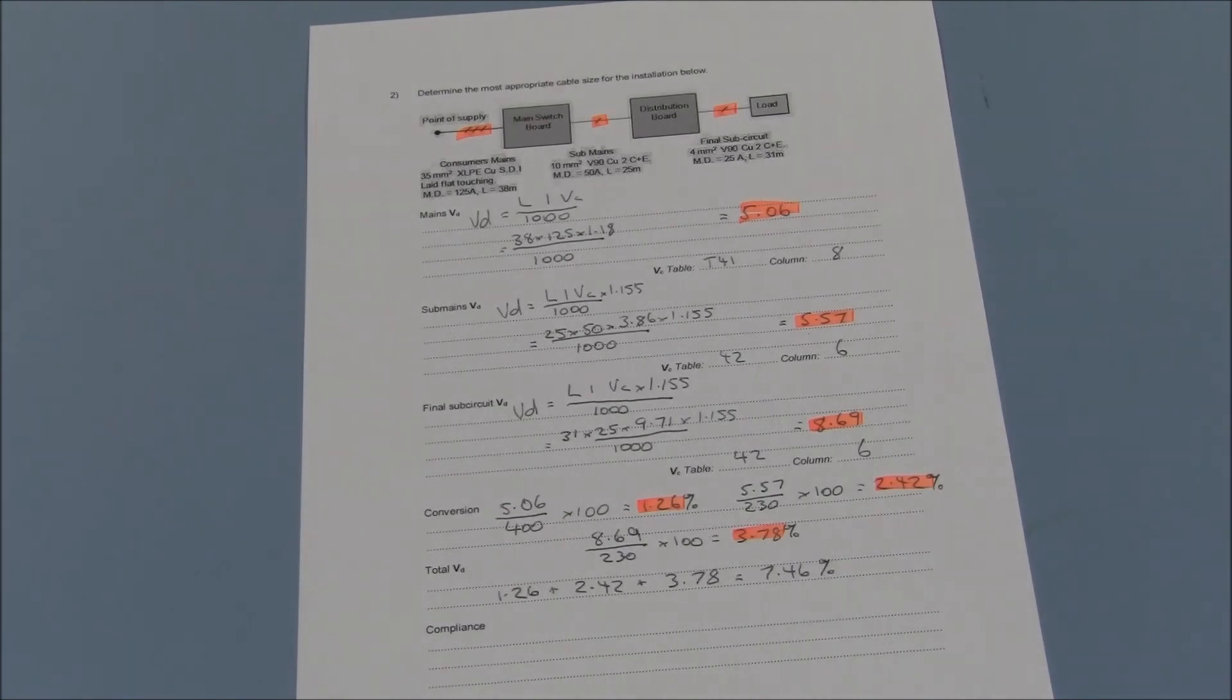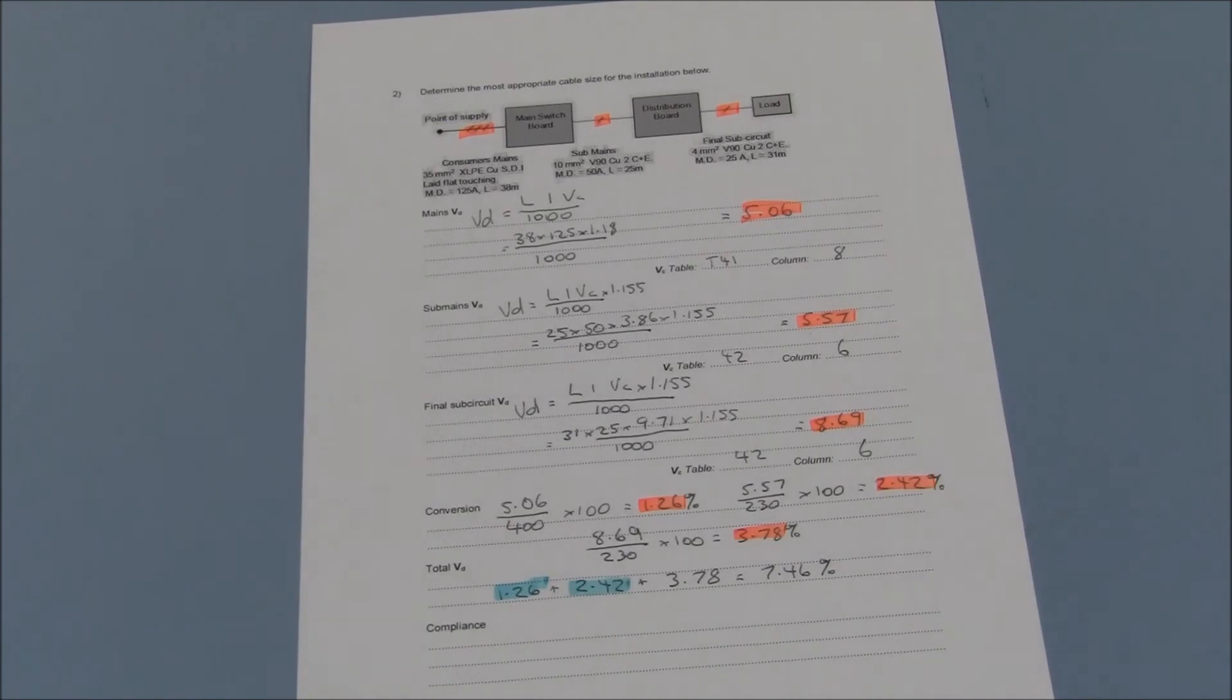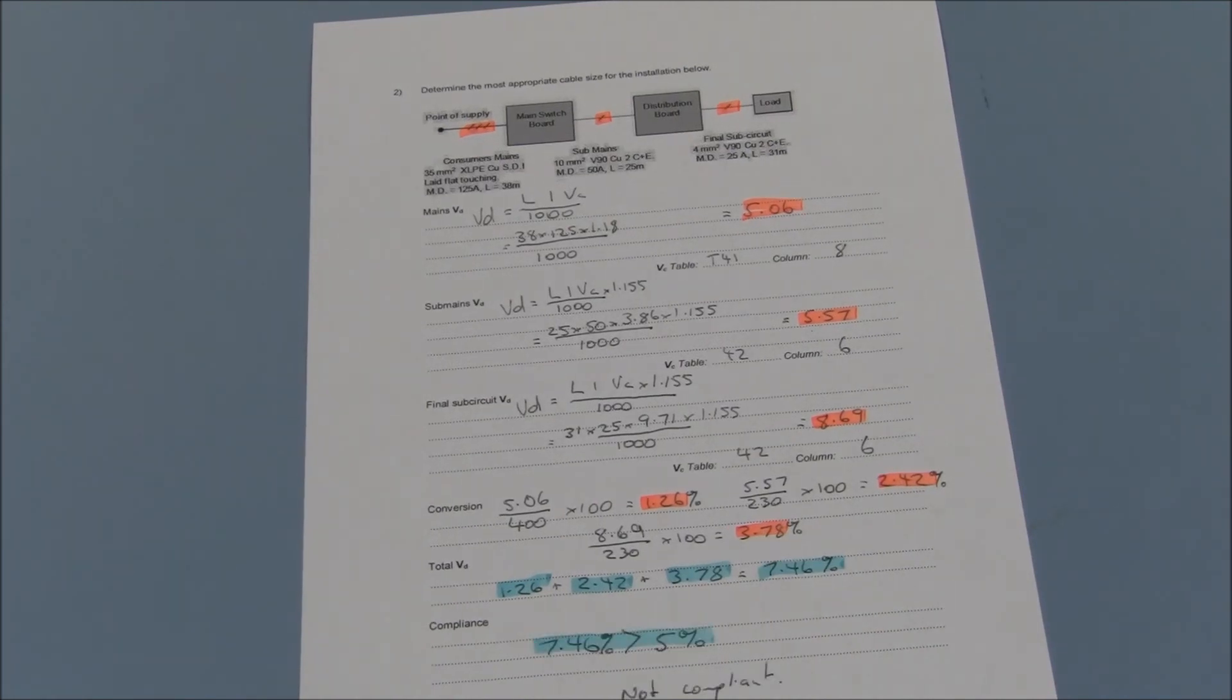1.26% plus 2.42% plus 3.78% equals a total voltage drop across the entire installation of 7.46%. At 7.46%, which is greater than 5%, this is a non-compliant installation.